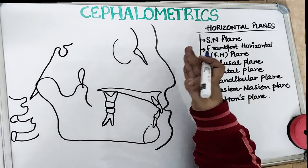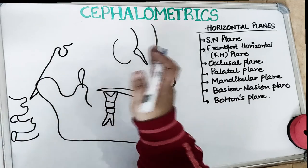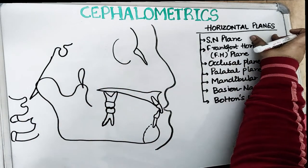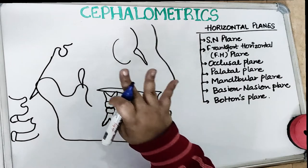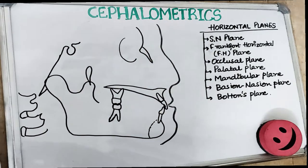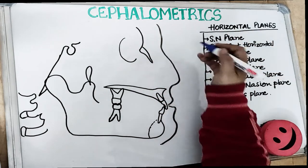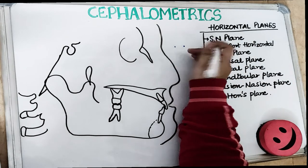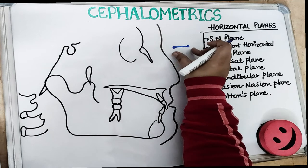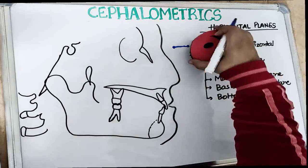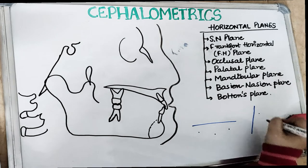Lines and planes in cephalometrics can be divided into two parts: horizontal planes — lines placed horizontally or parallel to the floor — with seven planes under this category, and vertical planes — lines placed perpendicular to the floor — with four planes. These lines in cephalometry are obtained by joining two cephalometric landmark points, which we studied in the previous video. Based on whether these lines are placed horizontally or vertically, we categorize them into horizontal or vertical planes.